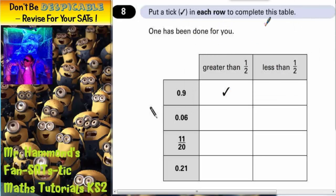Question 8. Put a tick in each row to complete this table. One has been done for you.